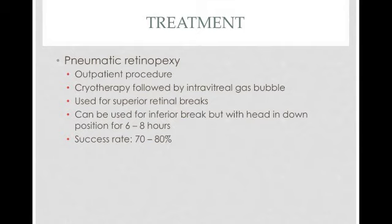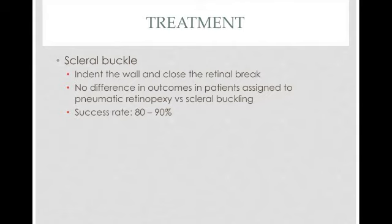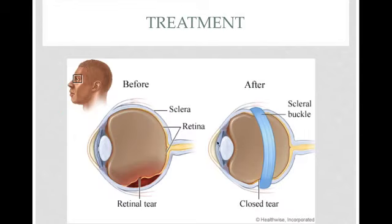The success rate for pneumatic retinopexy is about 70 to 80%. Scleral buckling involves making an indentation in the wall — like a belt that goes around the globe — to push the sclera closer to the detached retina. There are no significant differences in outcomes between pneumatic retinopexy and scleral buckling, though scleral buckling is not an outpatient procedure. Pneumatic retinopexy works best for superior and inferior breaks, while scleral buckle is preferred for breaks in other locations. The success rate for scleral buckling is about 80 to 90%.